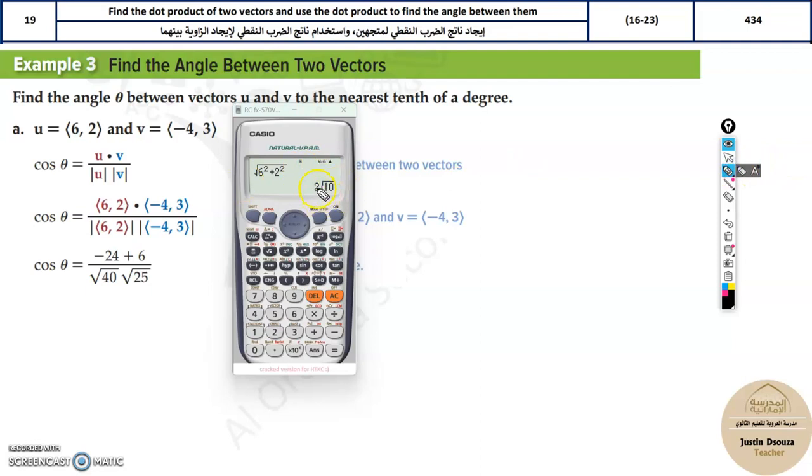I hope you understand that this root 40 can be written as four into 10, and then four can be taken out of the square root as two and remaining is root 10.